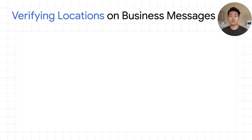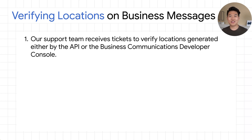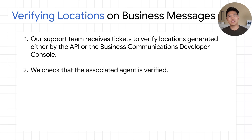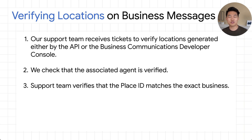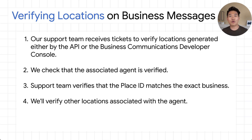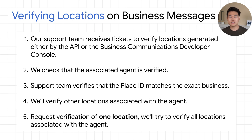The brand contact must reply saying they grant you the right to send messages on their behalf, and they must also send a security key that we've sent them in a separate email. Once the brand contact has completed this, our support team proceeds with the rest of the verification process and modifies your agent's state to verified. With locations you've already created that are associated with your agent, you can now begin verifying those locations. You can initiate a request to verify a location via the API or developer console. We check that the associated agent is verified and that the place ID for the location matches up with the exact business. Once our support team validates the locations, the states are visible in the developer console or by fetching the location entities using the API. You can then proceed with launching them.